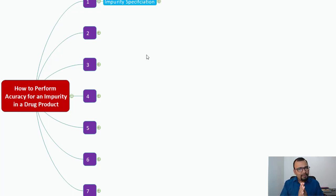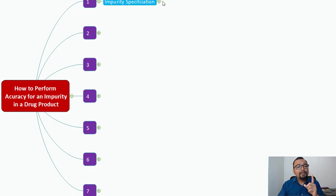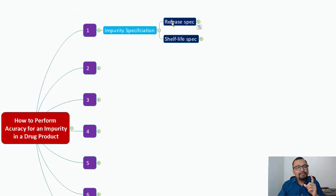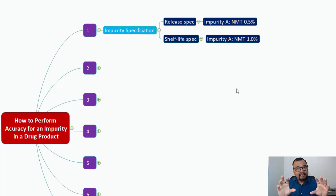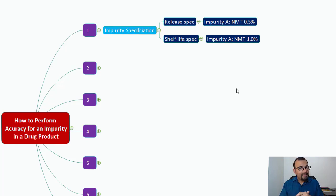The first point is the impurity specification. Before conducting the accuracy study, you must understand what is the specification for the given impurity. There could be two different specifications: one is the release specification and one is the shelf life specification. To explain the accuracy study, I have considered impurity A with a specification of not more than 0.5% at its release level, and the shelf life specification for the same impurity is not more than 1.0%.